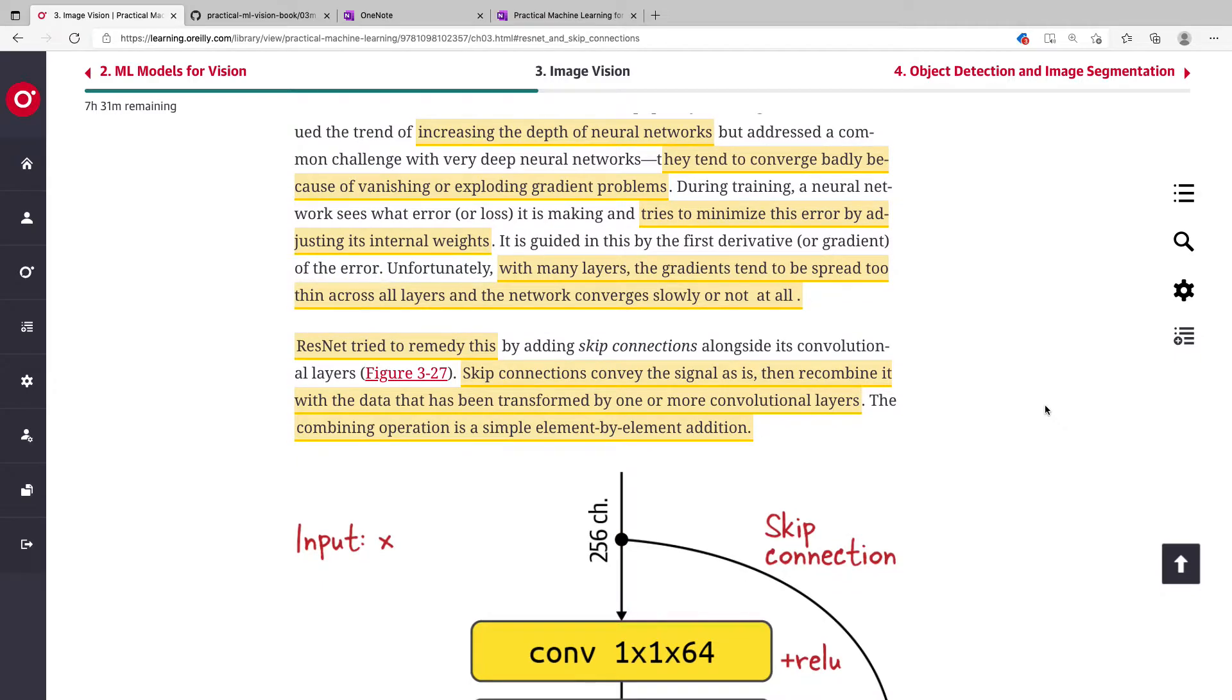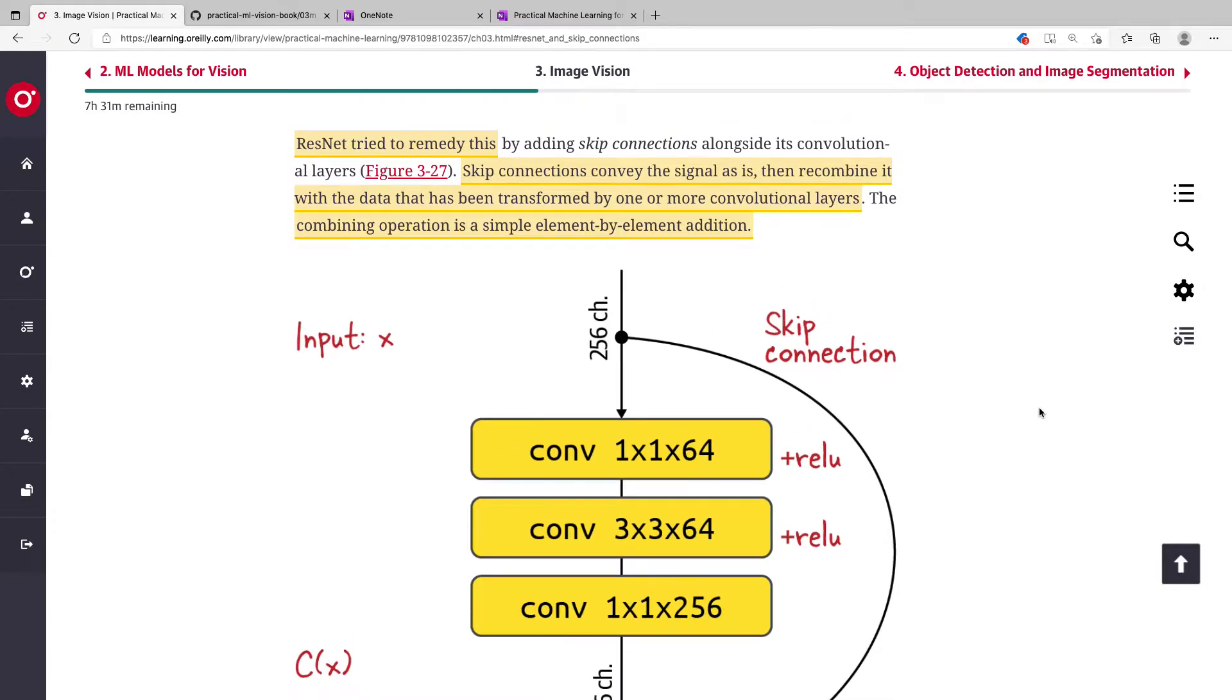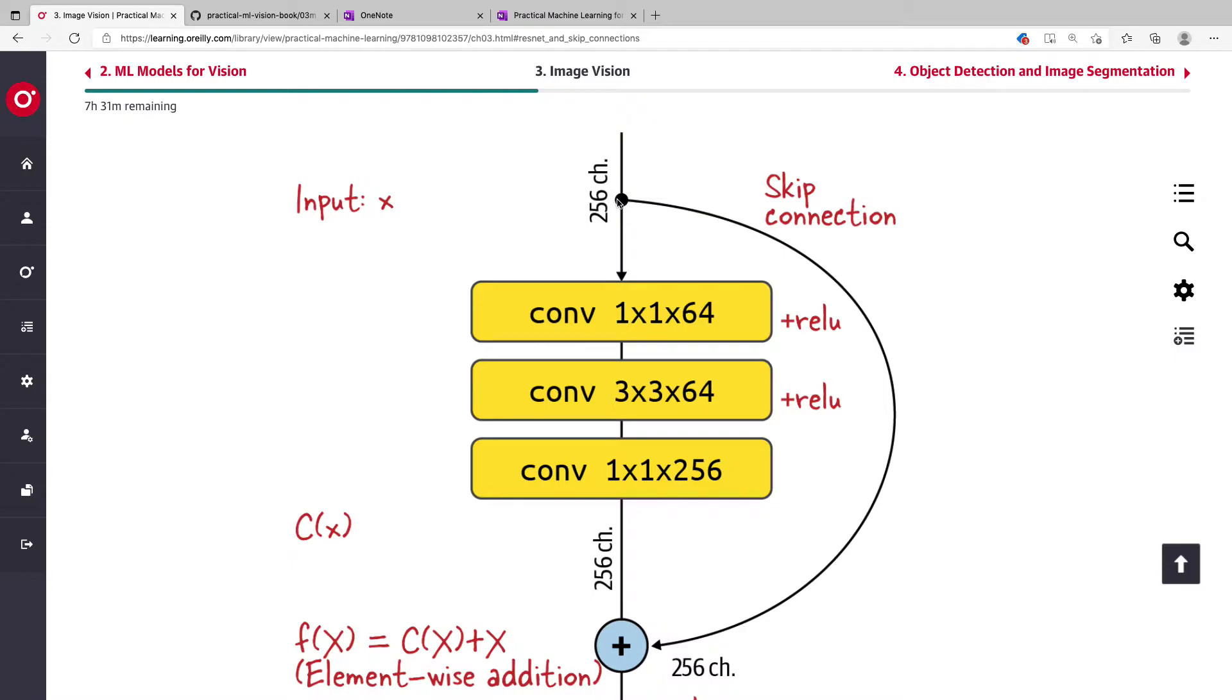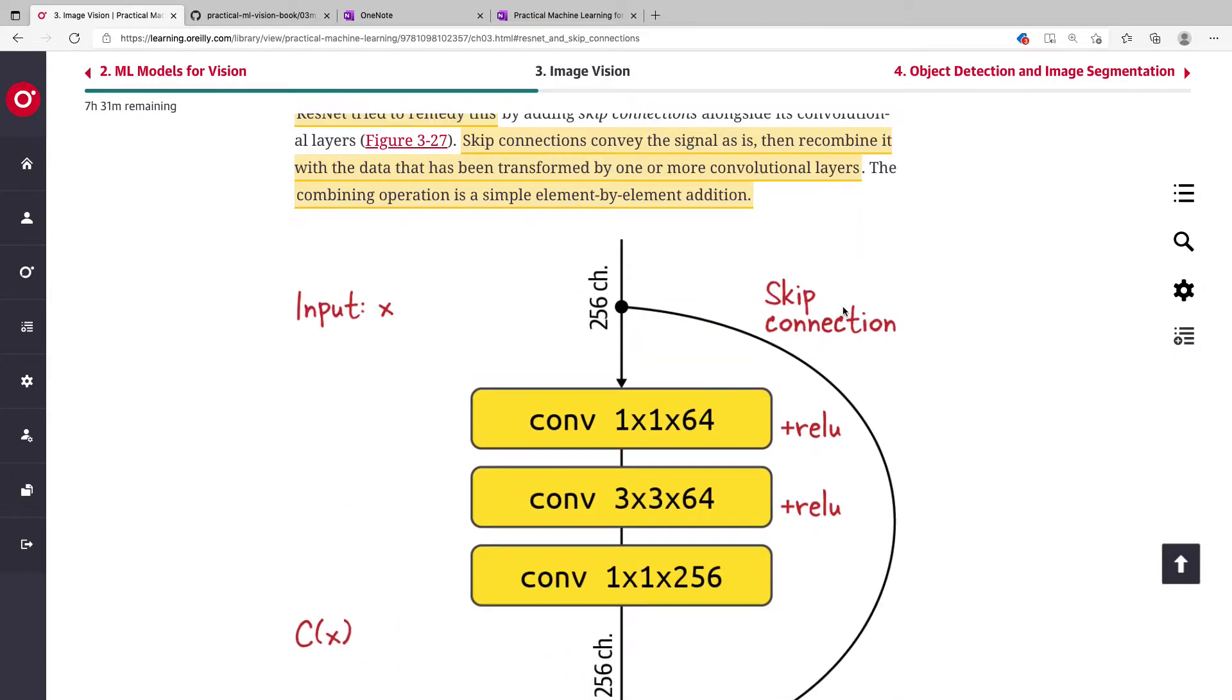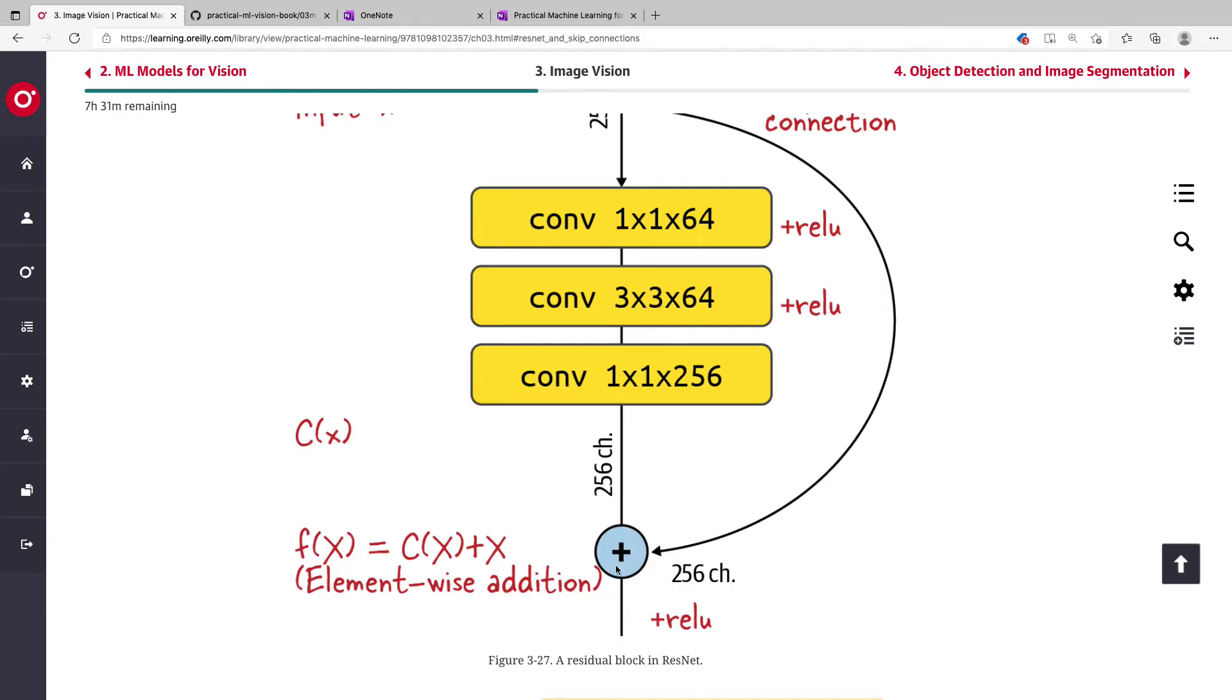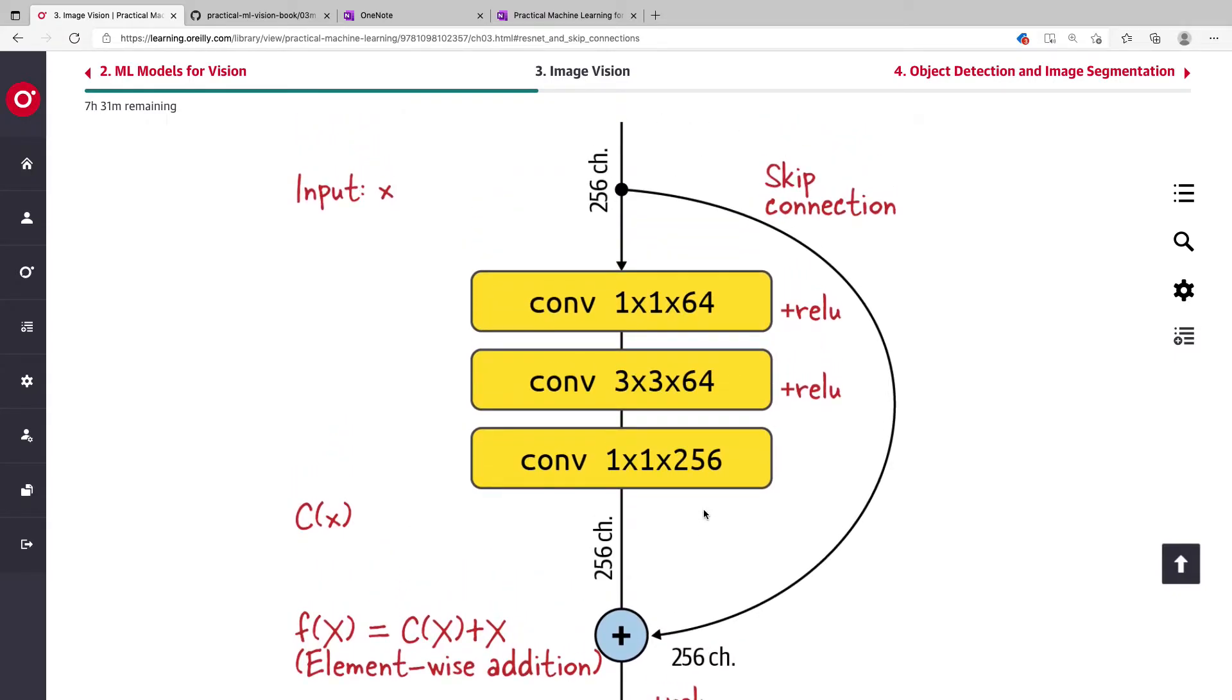This is the skip connection. Ordinarily, you have a typical flow from your input layer, then you have a set of convolutions and it continues. The idea is you now have a skip connection that flows directly to the output of this module. What you do is you combine the operation using simple element-by-element addition.